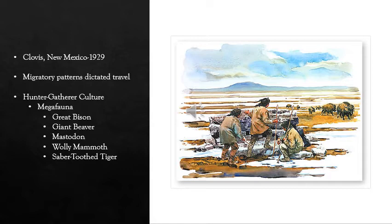The Clovis peoples are thought to have followed the migration patterns of big game until they came to primarily inhabit a particular region. At this point they seem to have begun to engage in trade with other tribes. As the climate changed and more animals were hunted to extinction, larger game began to disappear and smaller game survived. The people then began to gravitate toward permanent or semi-permanent settlements by lakes, streams, and rivers so they could harvest fish.